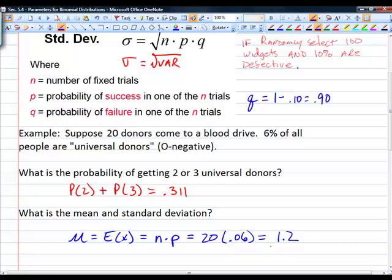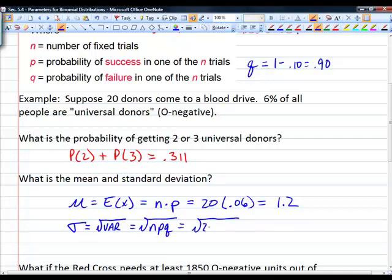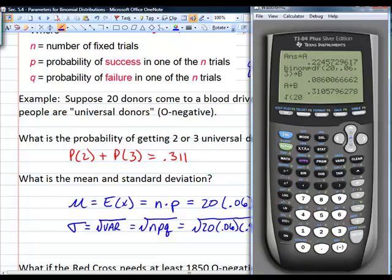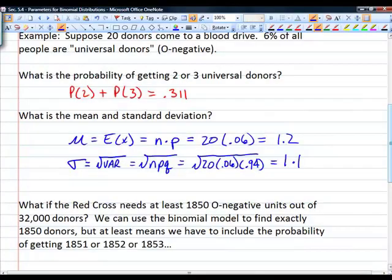So if our math department was having a blood drive, and 6% of the world's population is O negative, and we have 20 people show up, we can expect to have one or two O negative blood donors. What's the standard deviation? The standard deviation is the square root of the variance, and our variance is n times p times q. This is 20 times 0.06 times 0.94, which equals approximately 1.1.